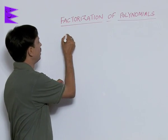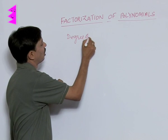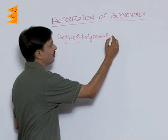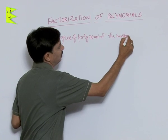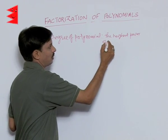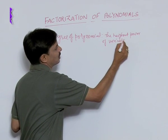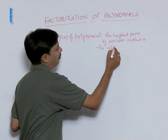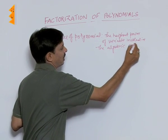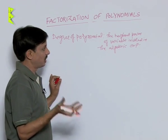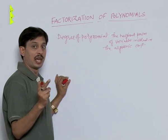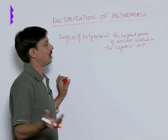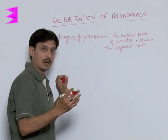So the degree of a polynomial means the highest power of the variable involved in the algebraic expression. If any algebraic expression is a polynomial, then among its combination of many terms, whichever term has the highest power — that highest power is known as the degree.